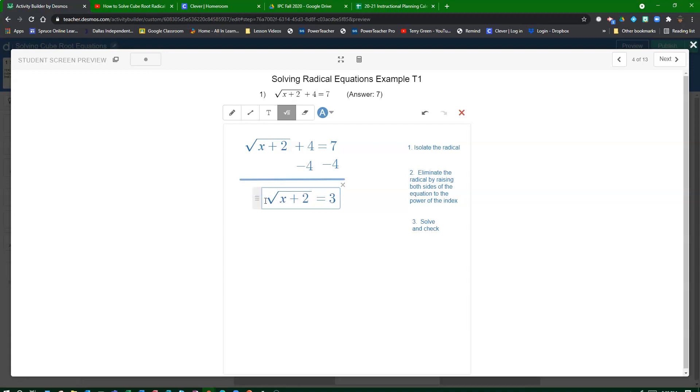Then the next thing we want to do is eliminate the radical by raising both sides of the equation to the power of the index. The index, of course, of the square root. But with the square root, the index is 2, but you don't have to write it. That's understood to be the index. So that really means I need to square both sides in order to get rid of the radical.